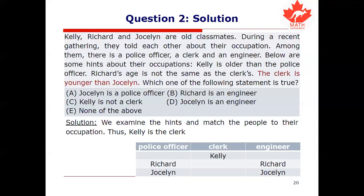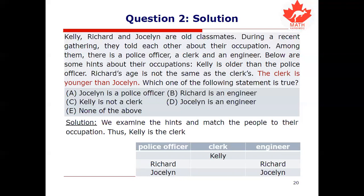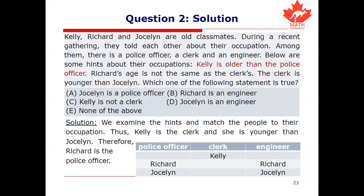Kelly is the clerk, so we can erase her from the engineer column. We know Kelly is older than the police officer, and the clerk who is Kelly is younger than Jocelyn. So Kelly is younger than Jocelyn, but Kelly is older than the police officer — therefore Jocelyn can't be a police officer. That forces Richard to be the police officer and forces Jocelyn to be the engineer. The answer is D: Jocelyn is an engineer. With just three simple sentences we managed to crack this entire logic problem wide open. I love these puzzles.